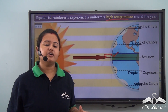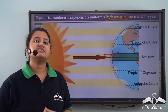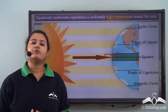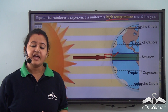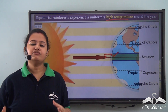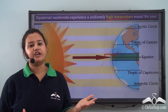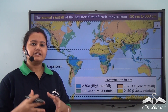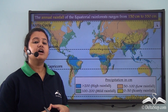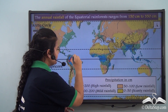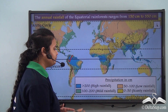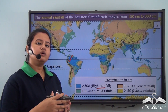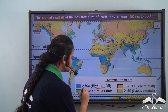As a result, the equatorial rainforest experiences a uniformly high temperature throughout the year — around the year the temperature is very high. Now let us discuss the rainfall pattern. This map shows the worldwide distribution of rainfall. The regions marked in blue are the regions of heavy rainfall, receiving an annual rainfall of more than 200 cm.